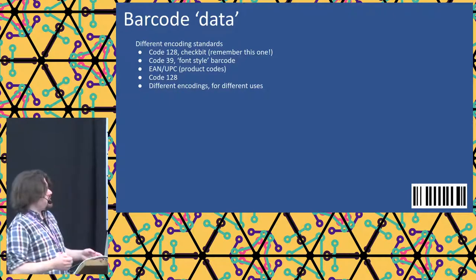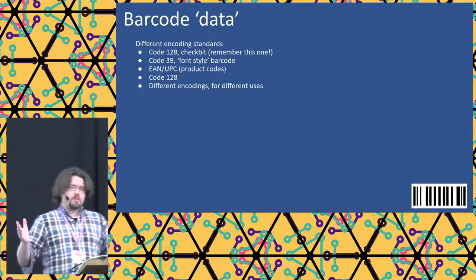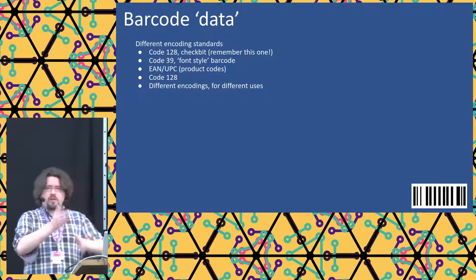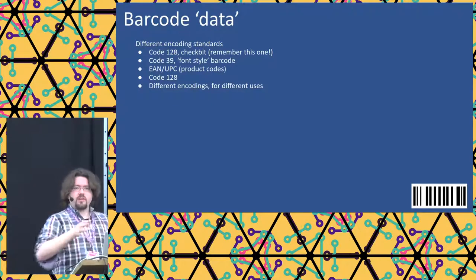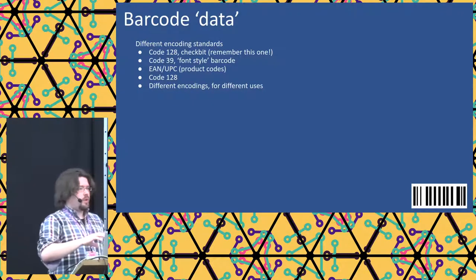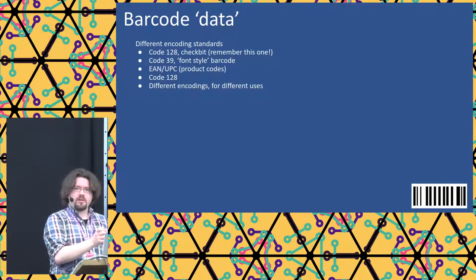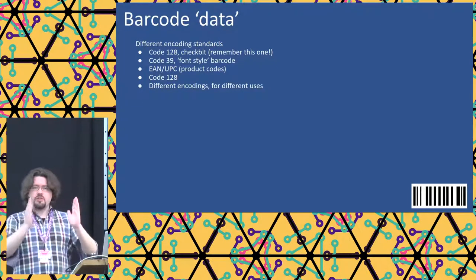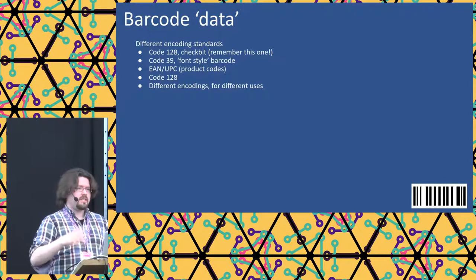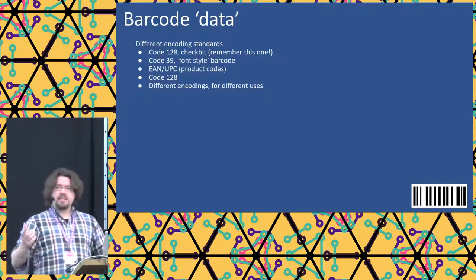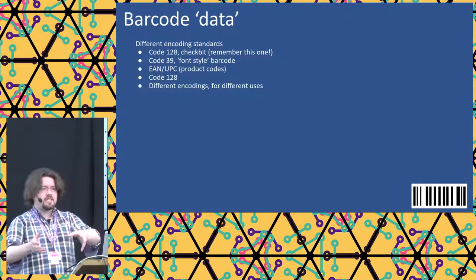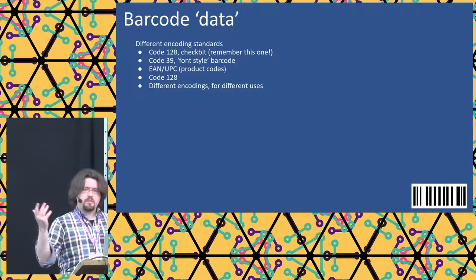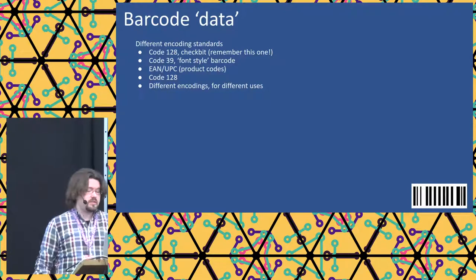Code 39 is interesting because it's more like a font-style barcode — every character has a specific combination of stripes. The data density isn't large, but it's built so that scanning halfway between characters doesn't produce a valid combination, so there's no way to misread it. It's used in many legacy applications because you don't need to calculate a barcode — you just put a font on a system and let it print. We also have UPC codes, which are the product codes we've already discussed.